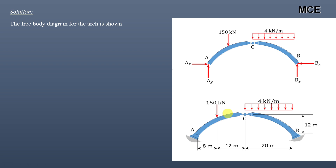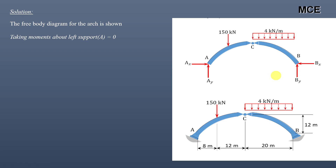The first step is to find the reactions for this arch. The free body diagram is shown. Let us assume the direction of reactions at point A: Ax acts in the rightward direction, Ay and By act in the upward direction, and Bx acts in the leftward direction. After that, take the moment about the left support A equals zero, assuming clockwise moments are positive and anti-clockwise moments are negative.